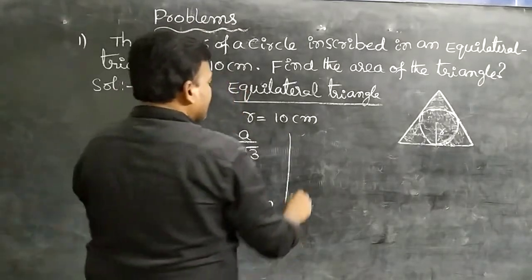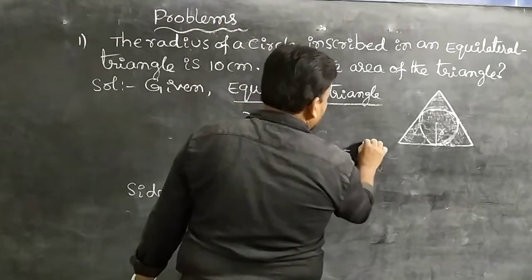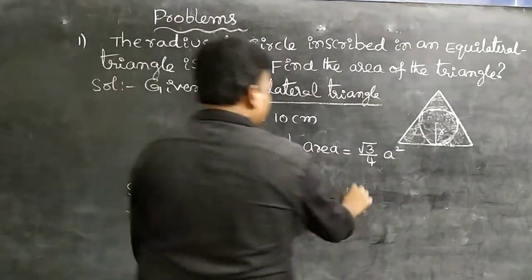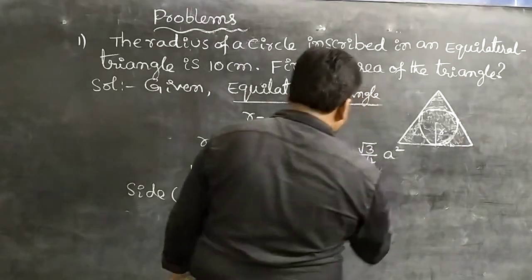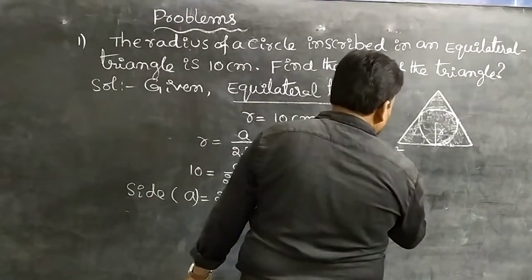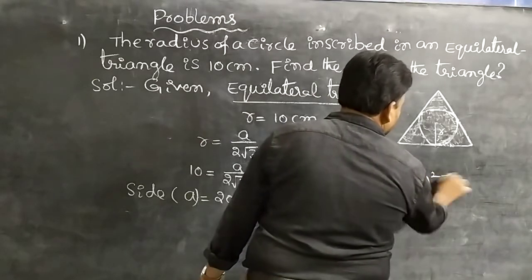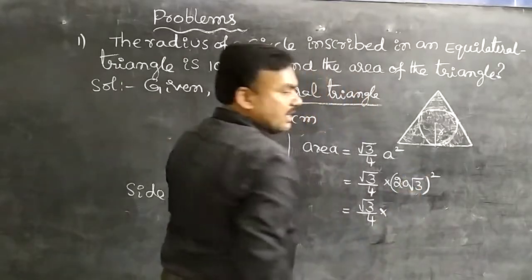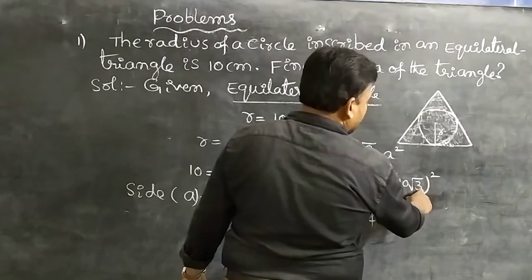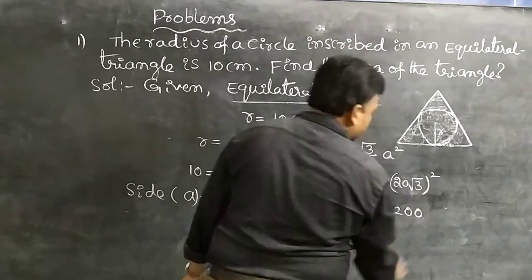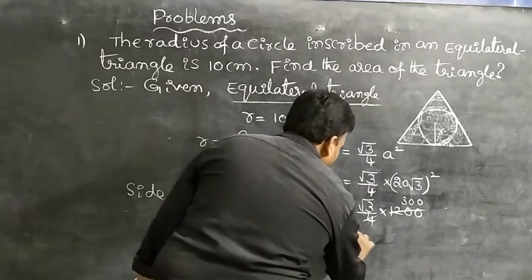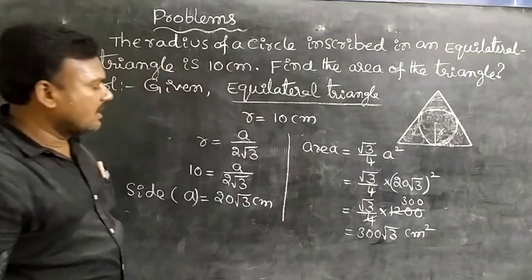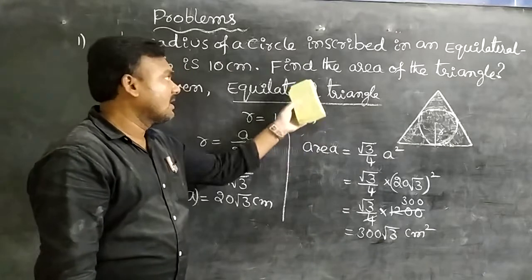Next, area of equilateral triangle = (√3/4)a². Substituting a = 20√3: area = (√3/4) × (20√3)² = (√3/4) × 400 × 3 = (√3/4) × 1200 = 300√3 square centimeters. That is the solution to the given problem.